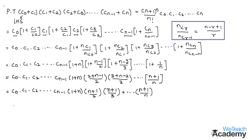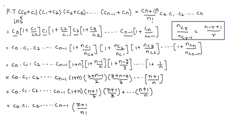We observe that the remaining terms are the expansion of (n+1)^n divided by n factorial. Therefore this equals the required RHS, completing the proof. This was a basic introduction on how to solve an example on binomial theorem.